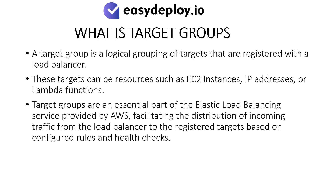What is Target Groups? A Target Group is a logical grouping of targets that are registered with a load balancer. These targets can be resources such as EC2 instances, IP addresses, or Lambda functions. Target Groups are an essential part of the Elastic Load Balancing Service, facilitating the distribution of incoming traffic based on configured rules and health checks.